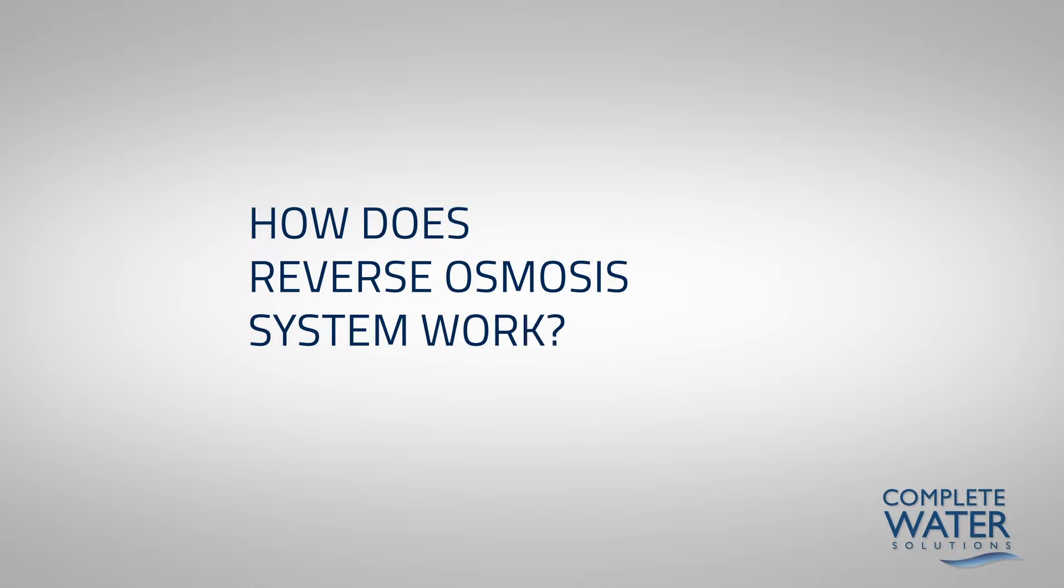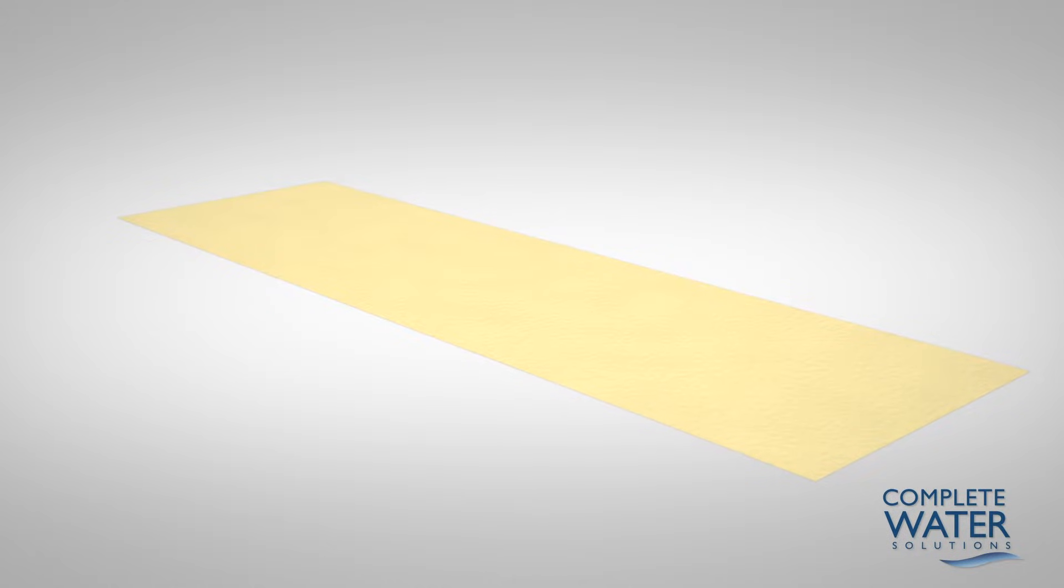How does a reverse osmosis system work? A reverse osmosis membrane is constructed from a membrane flat sheet. They are comprised of three layers.